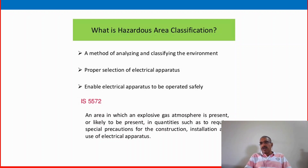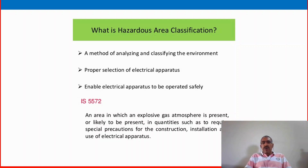We already discussed about fire and gas protection and various instrumentation. We are working in a toxic, hazardous and flammable environment. Hazardous Area classification provides a method of analyzing and classifying the environment. If you can analyze and classify the environment in various hazardous conditions, then only we can properly select electrical apparatus or other fire and gas equipment used in that area.